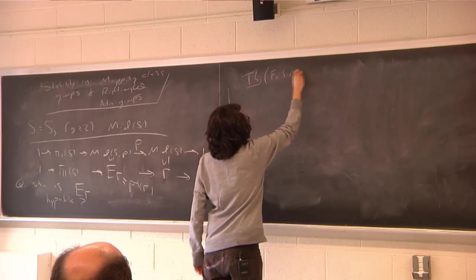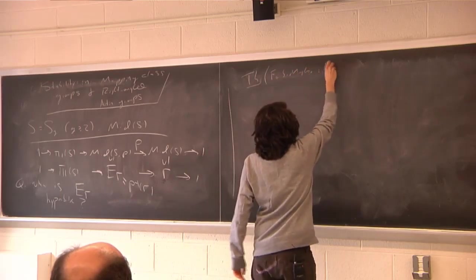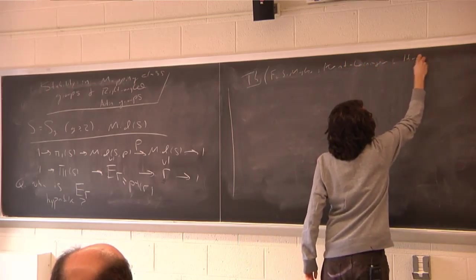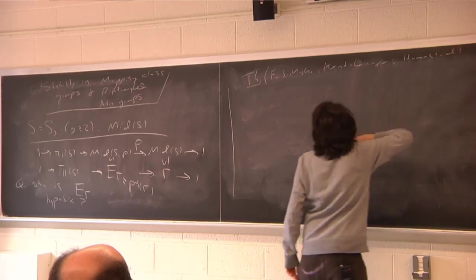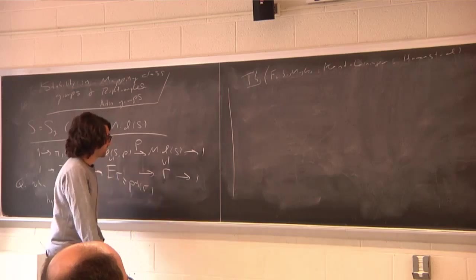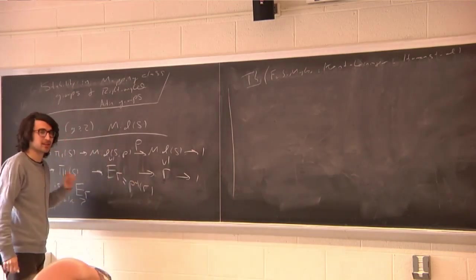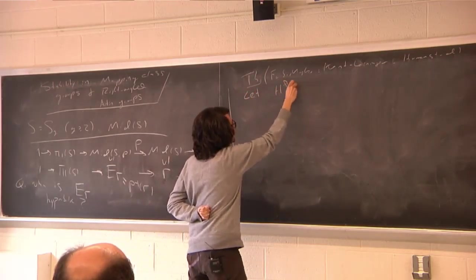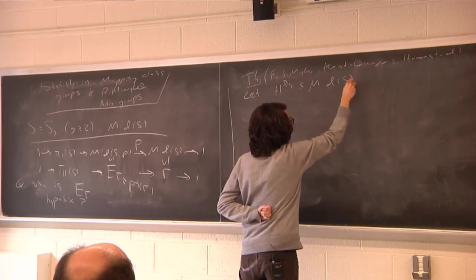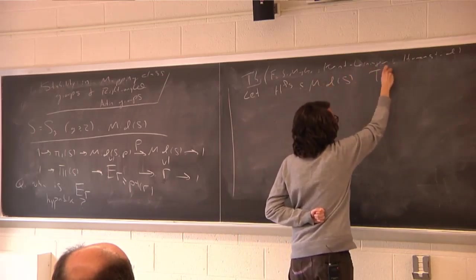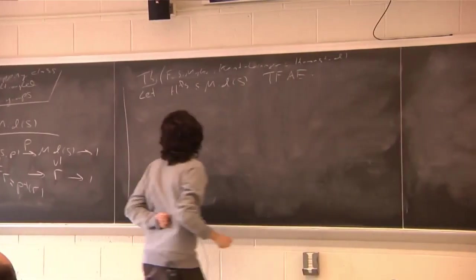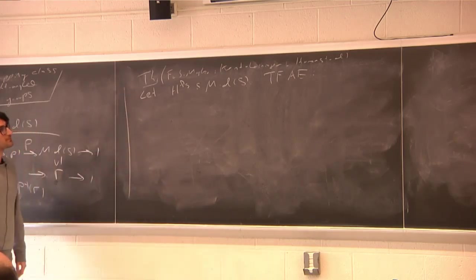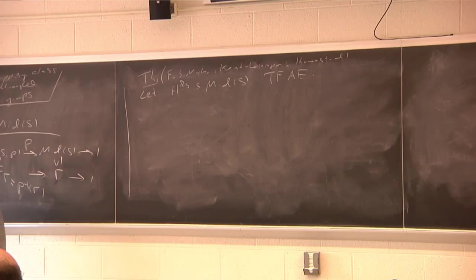The theorem gives answers to the question of when the corresponding extension is hyperbolic. Let H be a finitely generated subgroup of the mapping class group. The following are equivalent, and when H satisfies one of them we say it's convex co-compact. The first condition is that H is convex co-compact — which will be defined by the other conditions.